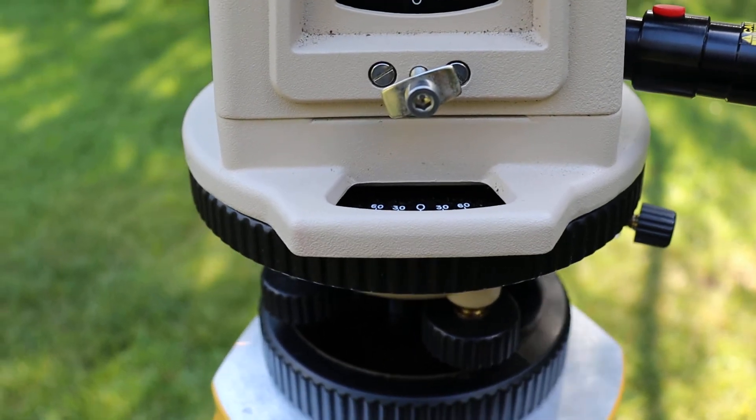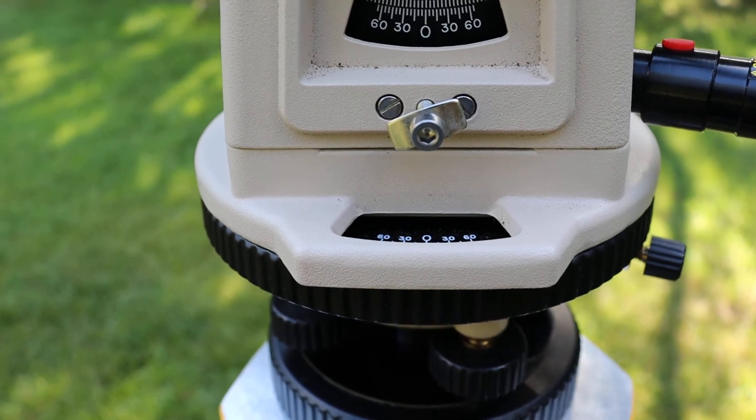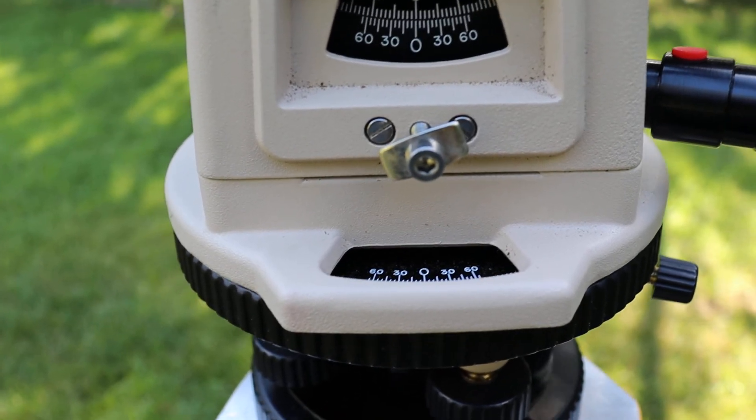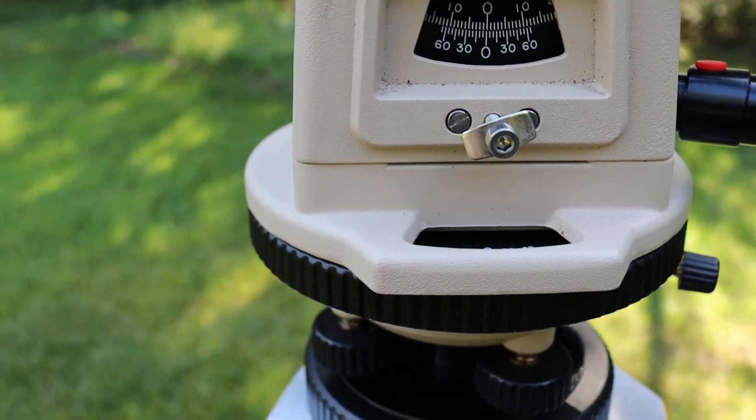Now the next thing that we're going to need to know for the transit is how to determine your H-I, or the height of your instrument, and we're going to do this by shooting from a known point called a back sight.